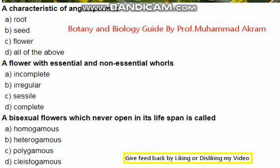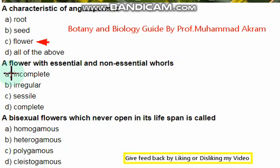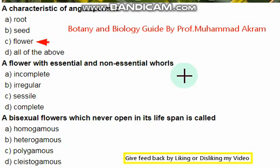A special characteristic of angiosperm: root is almost present in all plants, seed, flowers — the right option is flower. Special characteristic of angiosperm is presence of flowers. Next question: a flower with essential and non-essential whorls is called...